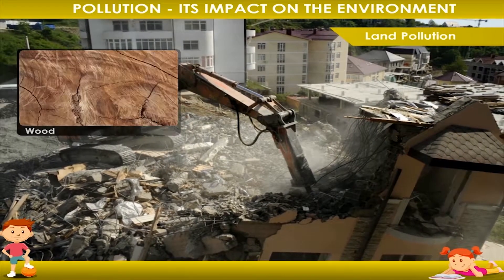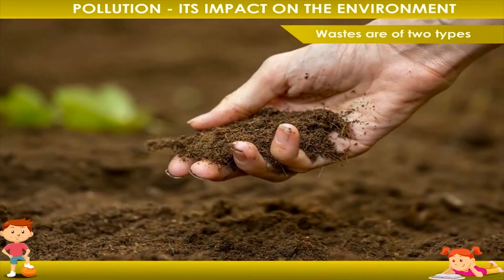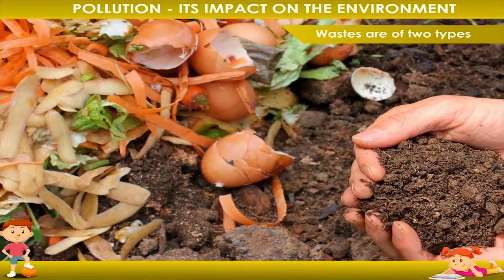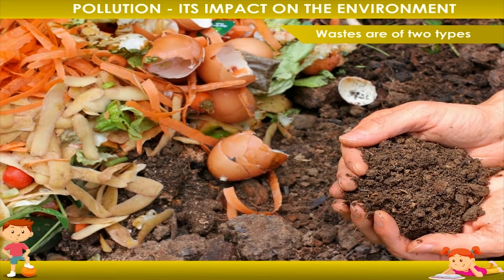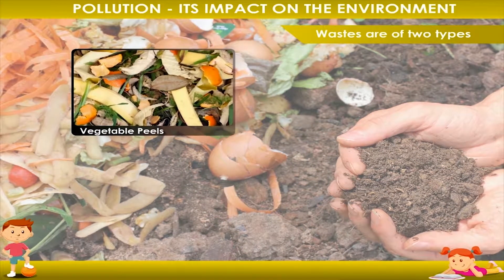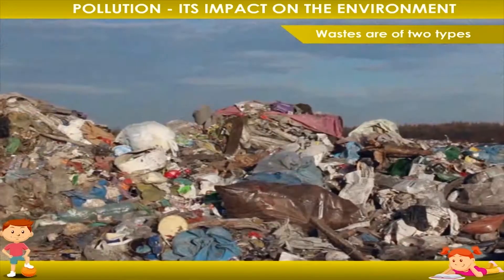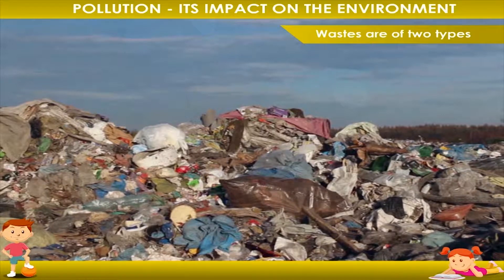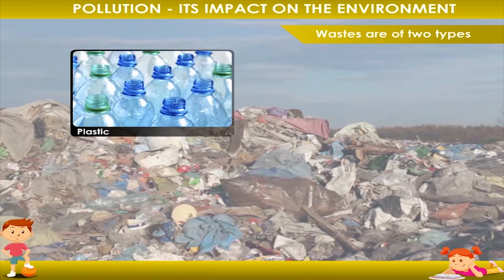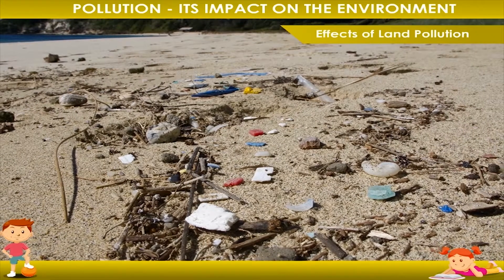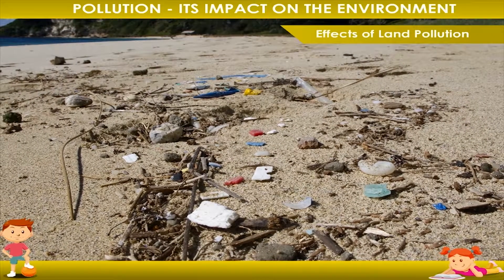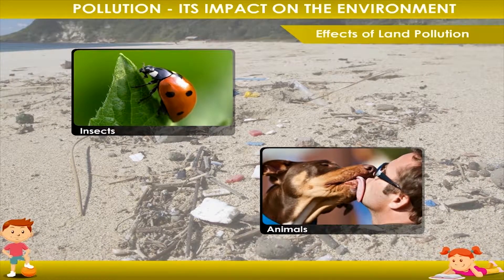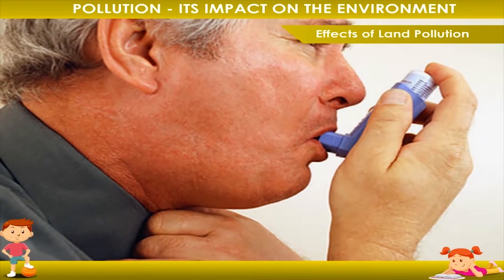Wastes are of two types: biodegradable and non-biodegradable. Biodegradable wastes can rot in the soil and mix with it — examples include vegetable peels, leaves, and things made of paper. Non-biodegradable wastes don't decay or rot in the soil and can make our land polluted — examples include plastic, rubber, glass, and metals. Effects of land pollution: it reduces the quality of soil due to fertilizers and pesticides. Insects and animals roam around piles of garbage and spread germs and diseases. It can cause problems in the human respiratory system, and piles of garbage pollute the surrounding air.